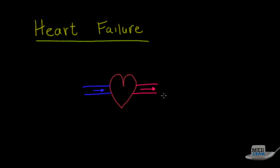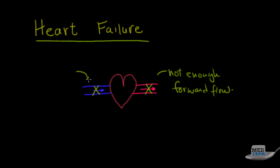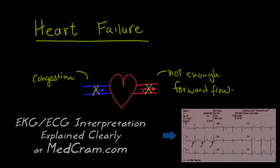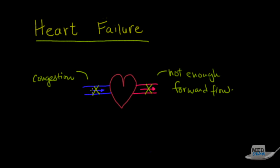Generally speaking, in heart failure you're not going to get as much blood going forward and not as much blood coming in. As a result, the two major types of symptoms are: not enough forward flow, and because there's not enough forward flow, blood stays in the heart. Blood which should be entering the heart is not entering, and as a result you're going to see congestion before it. This is like an accident on the freeway — no traffic in front of the accident because there's not enough forward flow, but plenty of traffic and congestion before it.